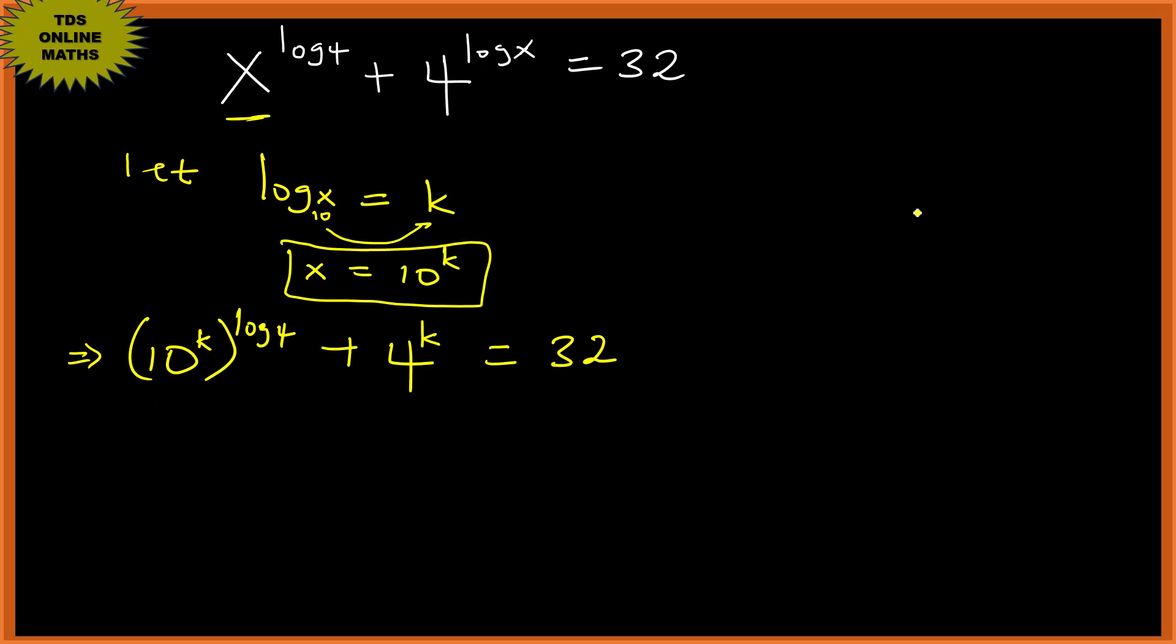Now let's observe something. If we're given x raised to n all raised to p, this is the same as x raised to n times p. So we have this one as power and this one as power, so it means this is the same as 10 raised to k log 4 plus 4 to the power k equals 32.